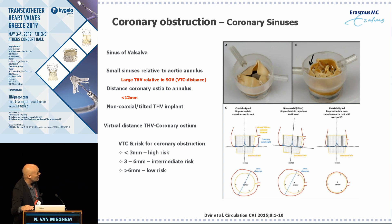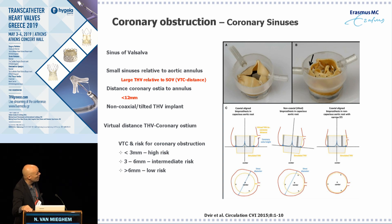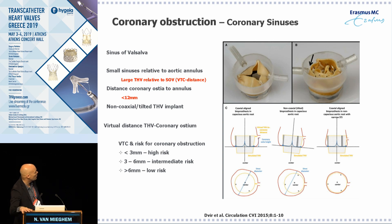If the distance from the coronary ostia to the annulus is less than 12 millimeters, you enter a potential danger zone for coronary obstruction. Also, a non-coaxial valve implantation can be associated with coronary obstructions — if the valve is tilted towards one of the coronary ostia, it closes the gap between the frame and the ostium and can occlude it. Similarly, when you have a small sinus, whatever valve you implant, there will be no distance between the coronary ostium and the frame.